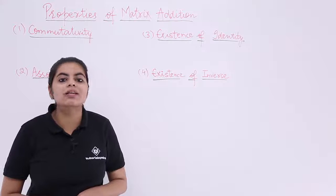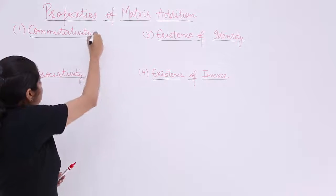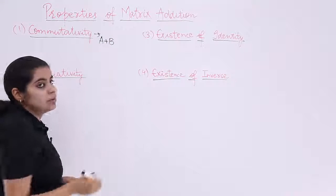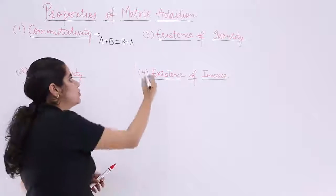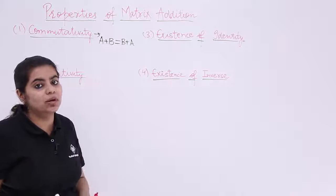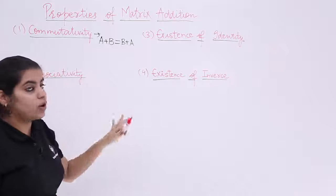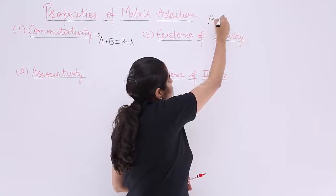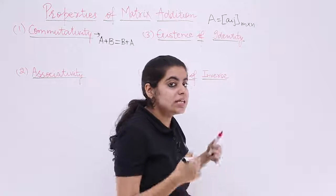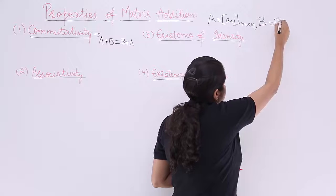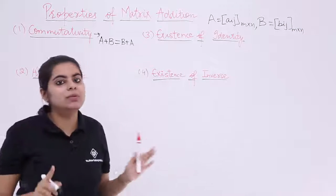In case of matrices, wherein the order is the same, matrix addition is possible. In those cases, commutativity exists: if I have two matrices A and B, doing A plus B gives the same result as B plus A. Note that A and B are two matrices of the same order, because only then matrix addition is possible. We generalize: matrix A is denoted as Aij with order M by N, and matrix B is Bij also of order M by N.